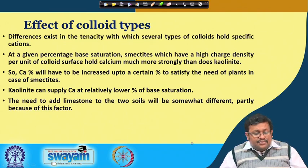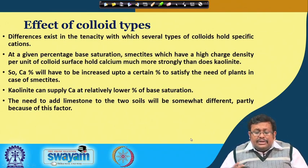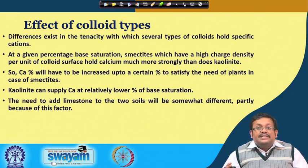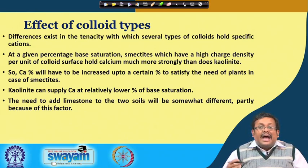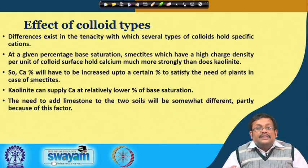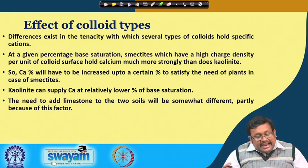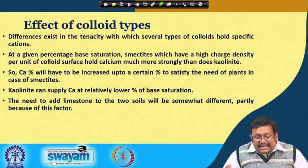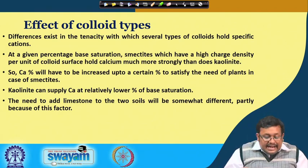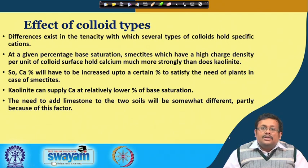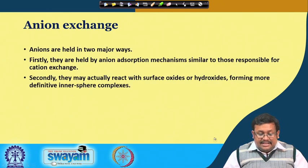Regarding the effect of different colloid types: differences exist in the tenacity with which several types of colloids hold specific cations. At a given percentage base saturation, smectites — which have high charge density per unit of colloid surface — hold calcium more tightly than kaolinite. Therefore, calcium percentage must be increased to a higher level to satisfy plant needs in smectite soils, whereas kaolinite can supply calcium at relatively lower percentages of base saturation.